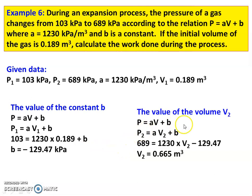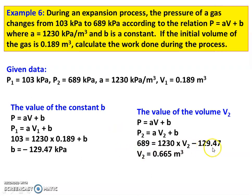Now finding the value of V2. Using the same equation P equal to AV plus B, applying for the second state: P2 equal to A into V2 plus B. Substituting P2 equal to 689 kPa equal to 1230 into V2 minus 129.47 kPa. Calculating, V2 equal to 0.665 m³.